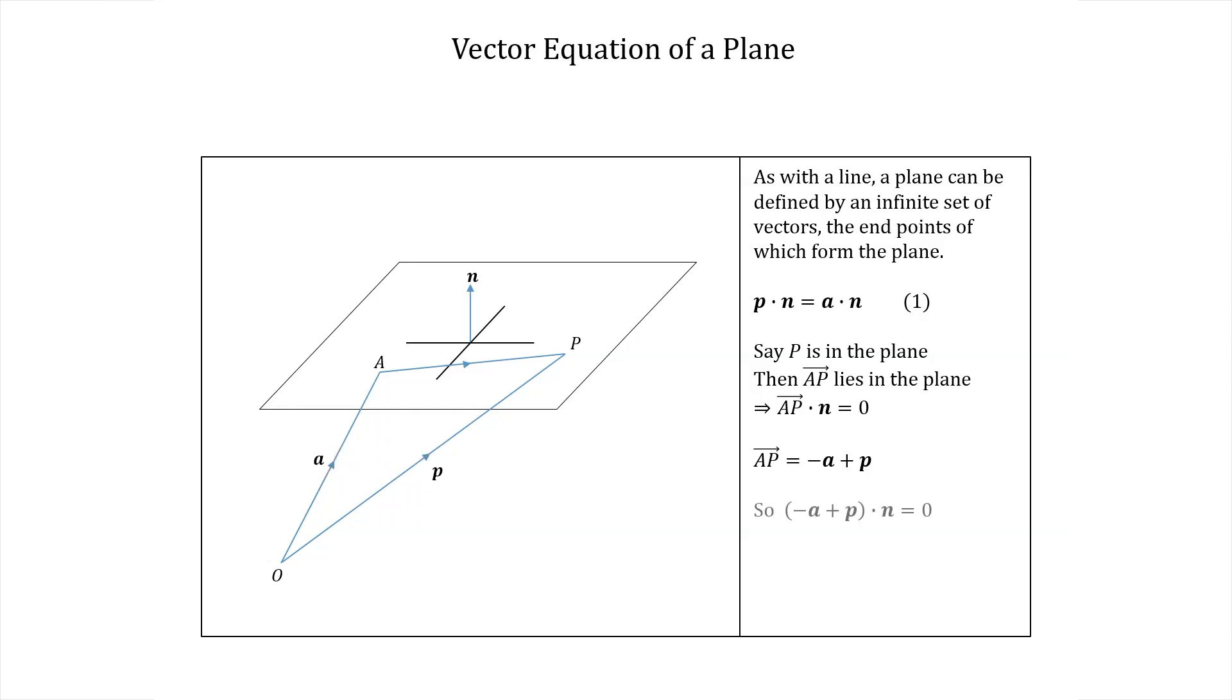So -a + p dot n equals 0. Distributing the dot product over the brackets gives us -a·n + p·n = 0. Rearranging gives p·n = a·n as required. So indeed all such vectors do satisfy equation 1.